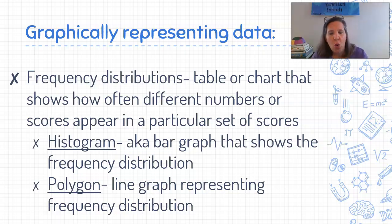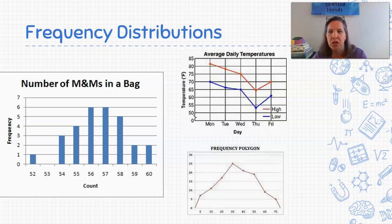That picture was what was called a frequency distribution. So when we're graphically representing our data, we are going to use frequency distributions when we're talking about mean, median, and mode most often. So a table or a chart that shows how the different numbers appear in the particular set of scores. So there's two different types that we see most often. We see a histogram, also known as a bar graph. And then we see a polygon, which is a line graph.